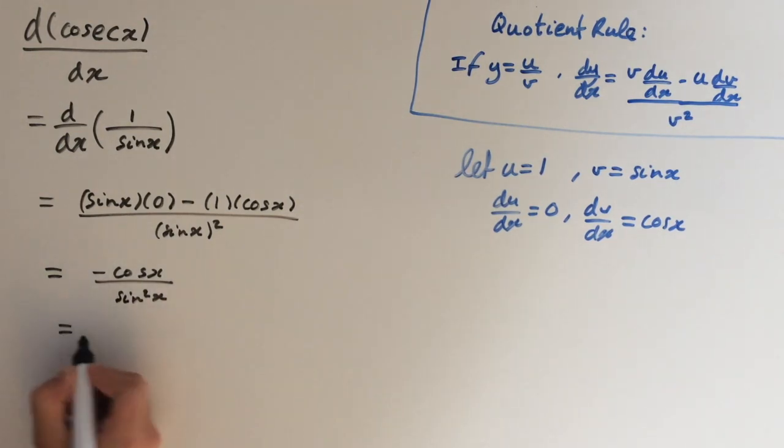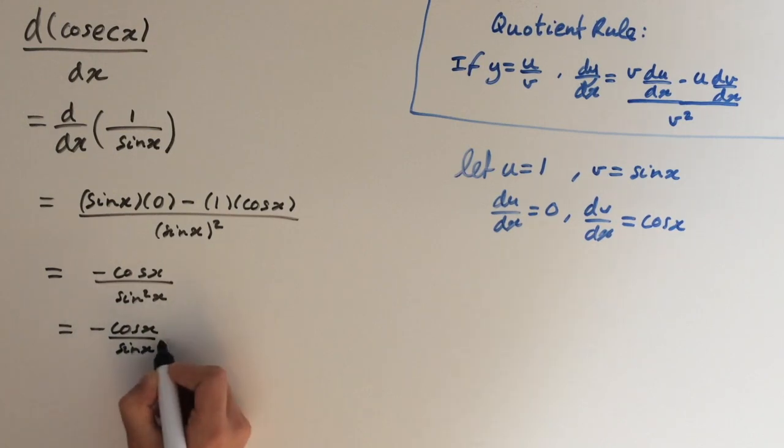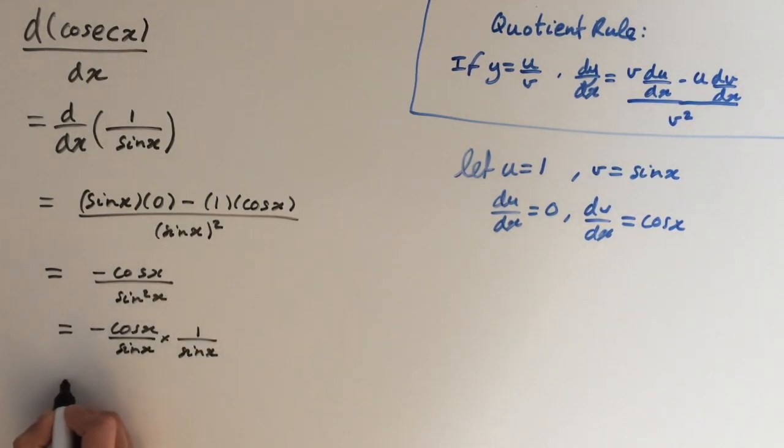So we can write this as minus cosine of x over sine of x times 1 over sine of x. So this equals minus cot of x times cosec of x. So there you go, the derivative of cosec of x.